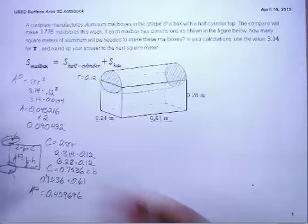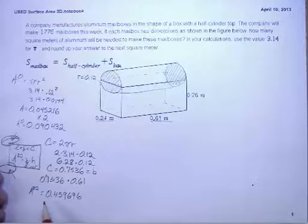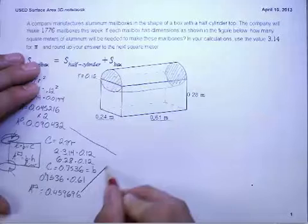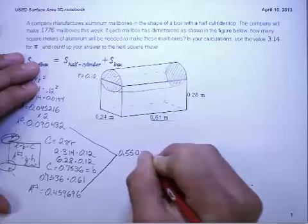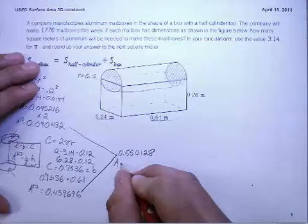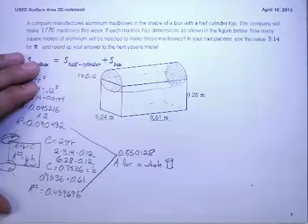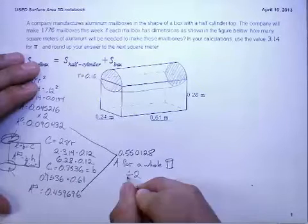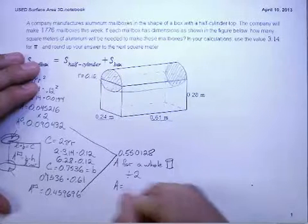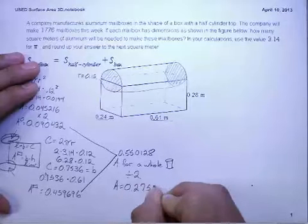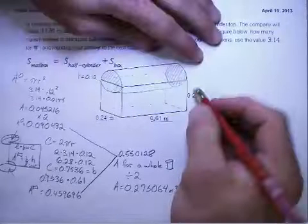It's important that we don't round in the middle of any of these. I was left with my area of my circle up top, and then I'm left with the area of my rectangle of our cylinder. What I'm going to do here is add these two together, and I get 0.550128. Now, that is the area for a whole cylinder. What we need to do now is divide by two, because we only have half of a cylinder on our box. Once I divide, my final area is 0.275064 meters squared. So, that is the area for our cylinder.